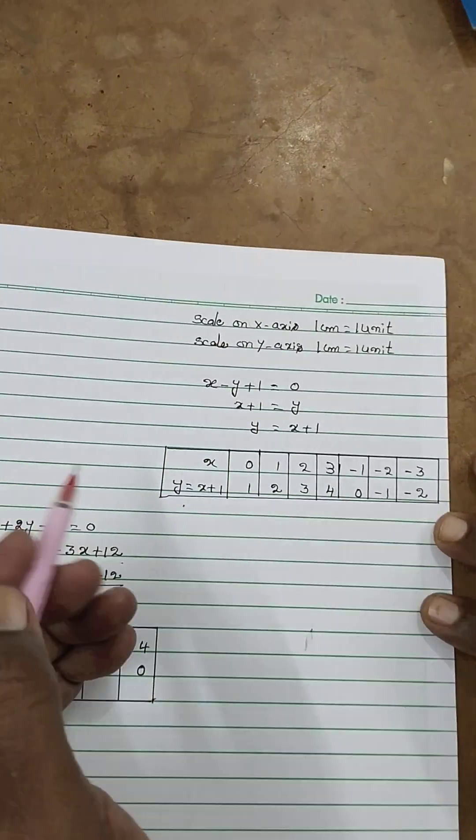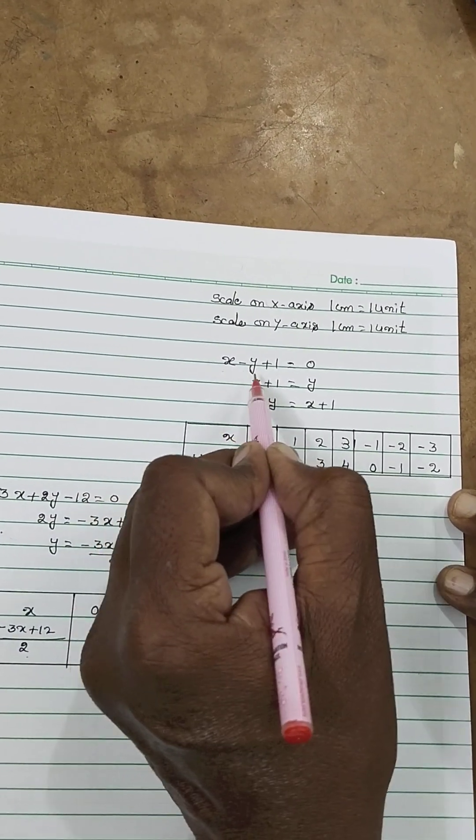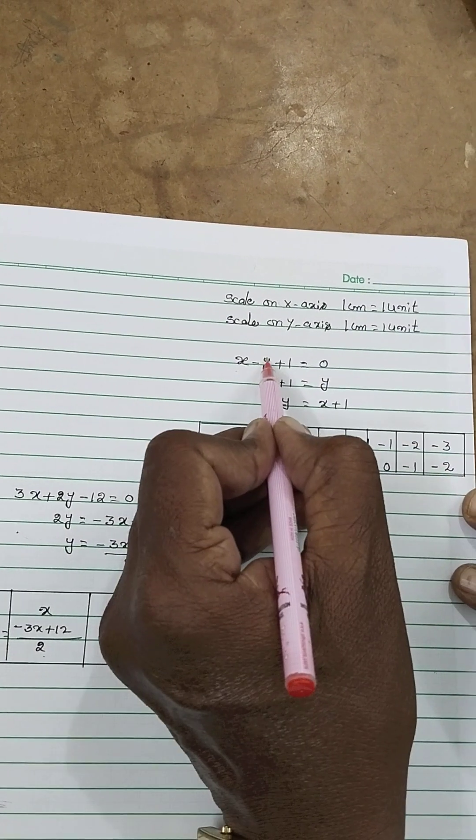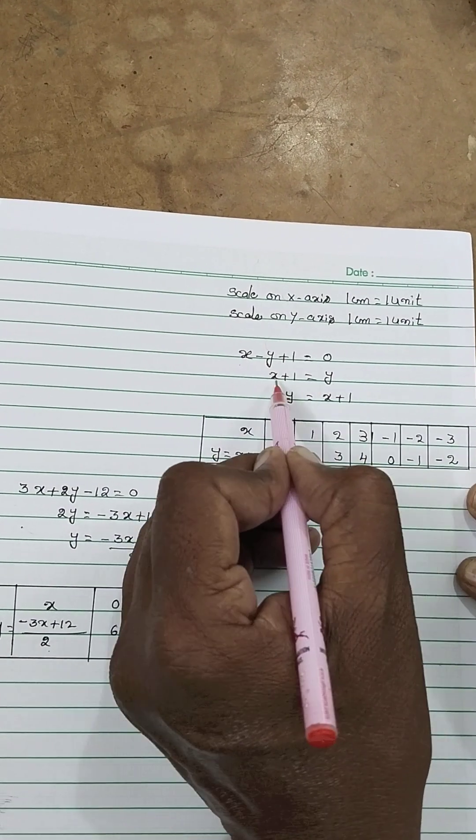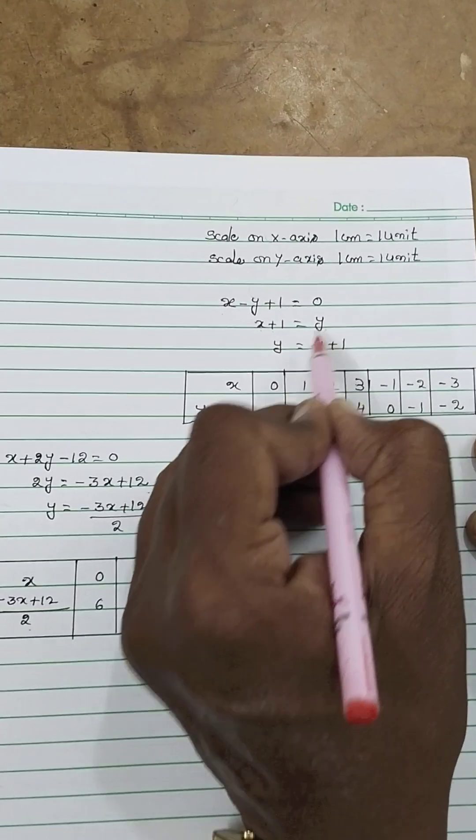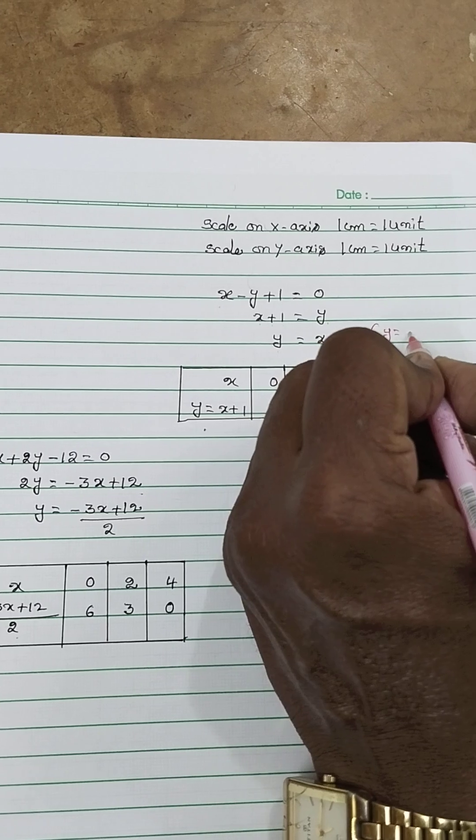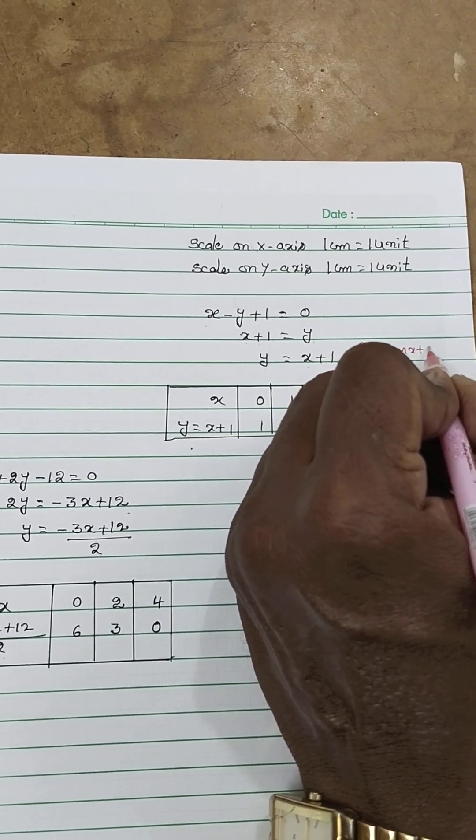First, take the equation. First equation is x minus y plus 1 equal to 0. You have to frame it. Take the minus y to the right side. It becomes x plus 1 is equal to y. y is equal to x plus 1. It's like y is equal to mx plus c form.